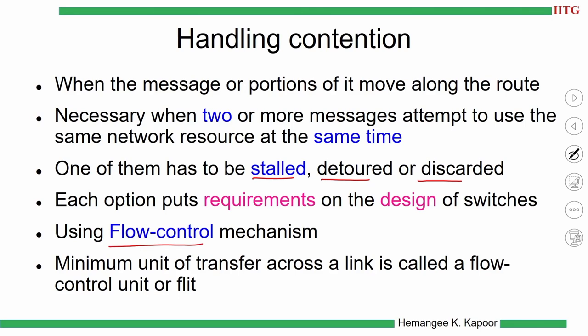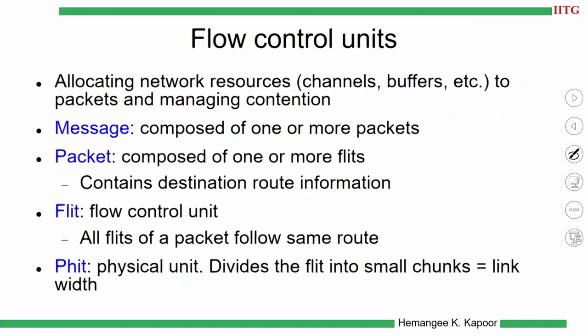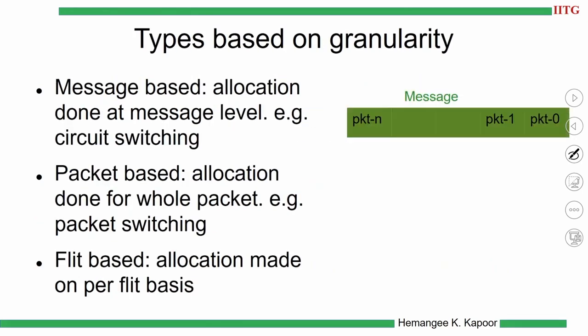Flow control is based on the granularity at which we handle contention. Granularity can be at the level of a complete message or small pieces of the message. These are called flow control units. Flow control can take place at the granularity of the complete message — one message consists of multiple packets — which is called message-based flow control. You could also do this at the level of a packet.